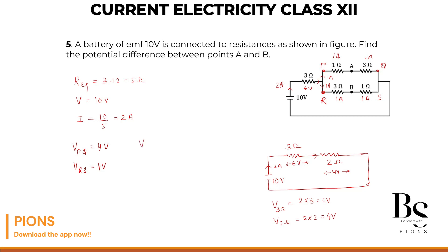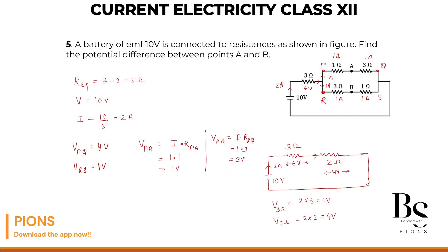Now let's find voltage VPA. VPA equals current times resistance across PA, which is 1 ampere into 1 ohm, giving 1 volt. Voltage VAQ equals current times resistance across AQ, which is 1 ampere into 3 ohm, giving 3 volt. Adding 1 volt and 3 volt gives 4 volt, which satisfies VPQ. So VPA equals 1 volt and VAQ equals 3 volt.